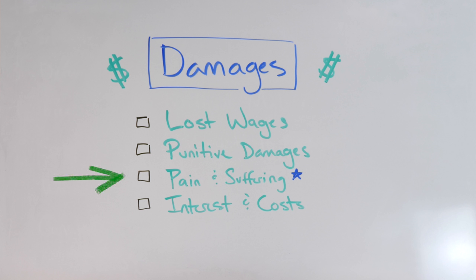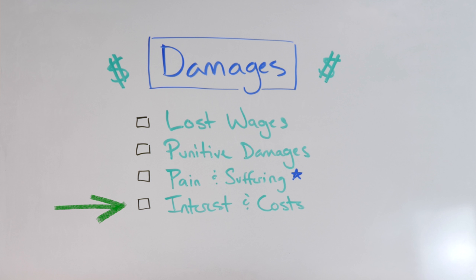The third type of damage is pain and suffering — the anguish and emotional duress that people go through as a result of the bad behavior. While the general public sometimes thinks that's silly, these damages are very real. If you've been a serious victim of defamation, you know what that means. And finally, you can recover interest and the costs of pursuing the case.